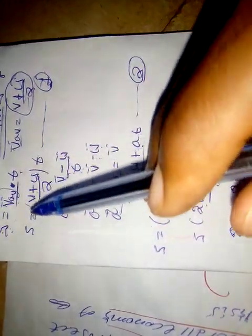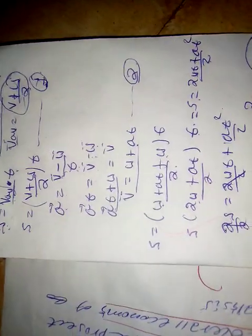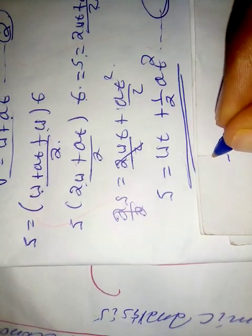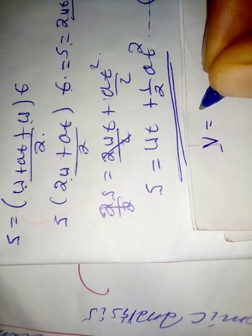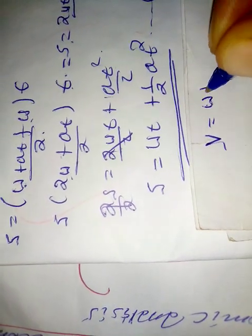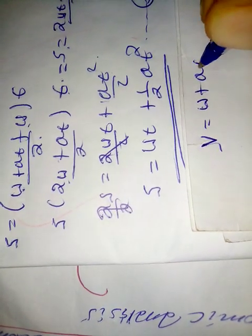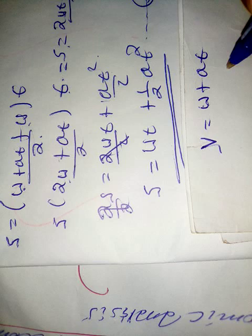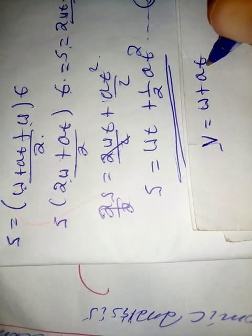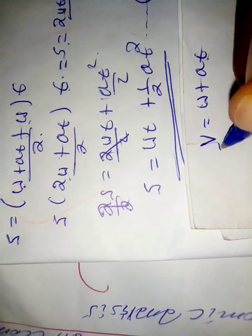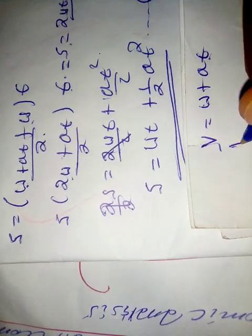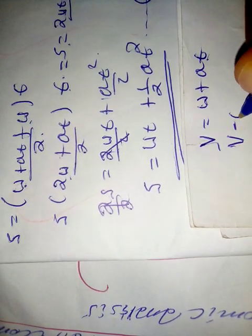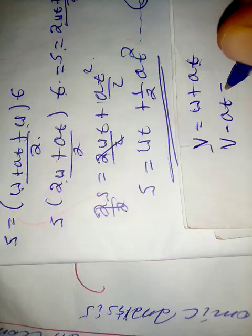V is equal to U plus AT. This is a positive one, and this is a positive one. V minus AT is equal to U.